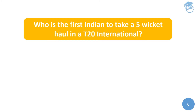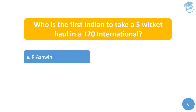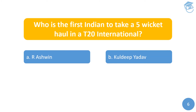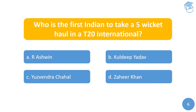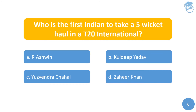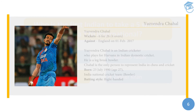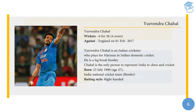The next question again from T20: who is the first Indian to take a five-wicket haul in a T20 international? Your options are: A) Ravichandran Ashwin, B) Kuldeep Yadav, C) Yuzvendra Chahal, or D) Zaheer Khan. The answer is Yuzvendra Chahal. This came against England on the 1st of February 2017, when he took six wickets for 26 runs in just four overs.